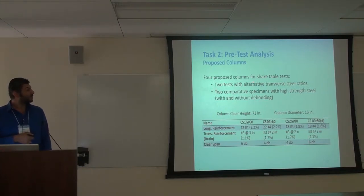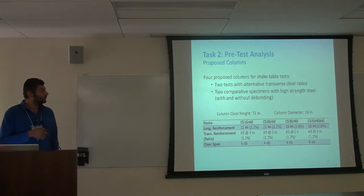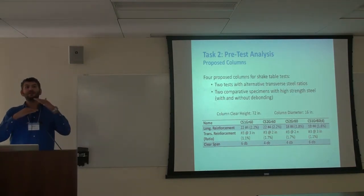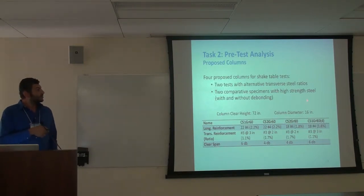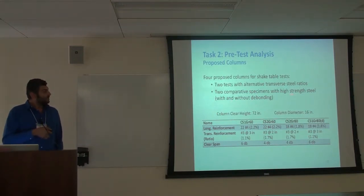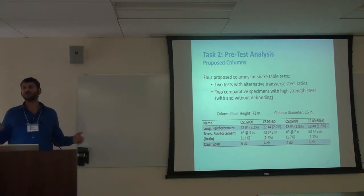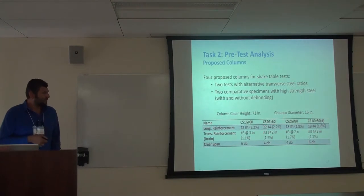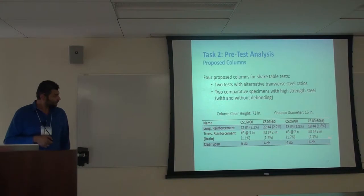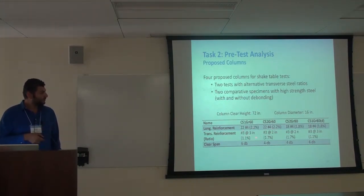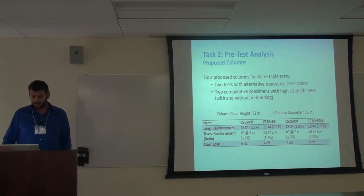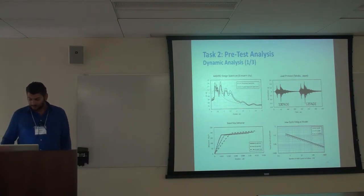Tentatively, we have four columns proposed for the shake table test. Two will use conventional grade 60 steel with different transverse reinforcement spacing — to examine confinement effects and the clear span for rebar buckling. The other two will use high-strength steel, with and without debonding. From preliminary analysis, debonding is more effective for high-strength steel. The variation covers both longitudinal and transverse reinforcement ratios of 1.1% and 1.7%. We did dynamic analysis and pushover analysis to predict behavior, using spectrally matched ground motion to compare short versus long duration effects.